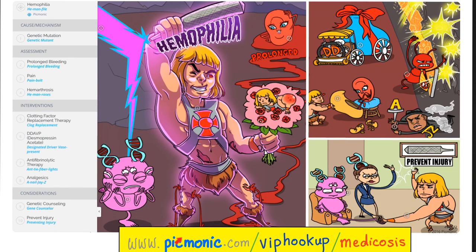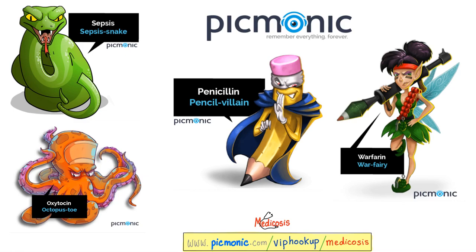Let's talk about hemophilia A from Picmonic. The key features include genetic mutation, prolonged bleeding, pain, and hemarthrosis. Interventions include replacing the clotting factor, desmopressin for hemophilia A, antifibrinolytic therapy, and analgesics. Genetic counseling is important, and try to prevent injury because even a minor skin scratch can lead to severe bleeding. Visit picmonic.com/viphookup/medicosis.